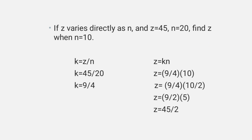Another example: If Z varies directly as N, and Z is 45 when N is 20, find Z when N is 10. First, find the constant: K equals Z over N, so K equals 45 over 20, which is 9 over 4. Now substitute: Z equals 9 over 4 times 10. Dividing each side by 2 gives 9 over 2 times 5, which equals 45 over 2. So Z is 45 over 2.